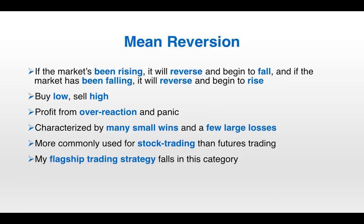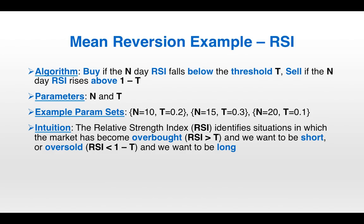Mean reversion is most commonly used in the stock market — it's more common there than in the futures market. In the futures market, momentum strategies tend to be more popular. But my flagship trading strategy does fall under the mean reversion umbrella and it is a futures trading strategy, so it most certainly can be done. A simple example is using the Relative Strength Index. The algorithm is to buy if the N-day RSI falls below threshold T, and sell if the N-day RSI rises above 1 minus T — two parameters, N and T. This RSI computation identifies situations where the market has become overbought or oversold: if overbought, we want to be short; if oversold, we want to be long, betting that the price is going to revert.